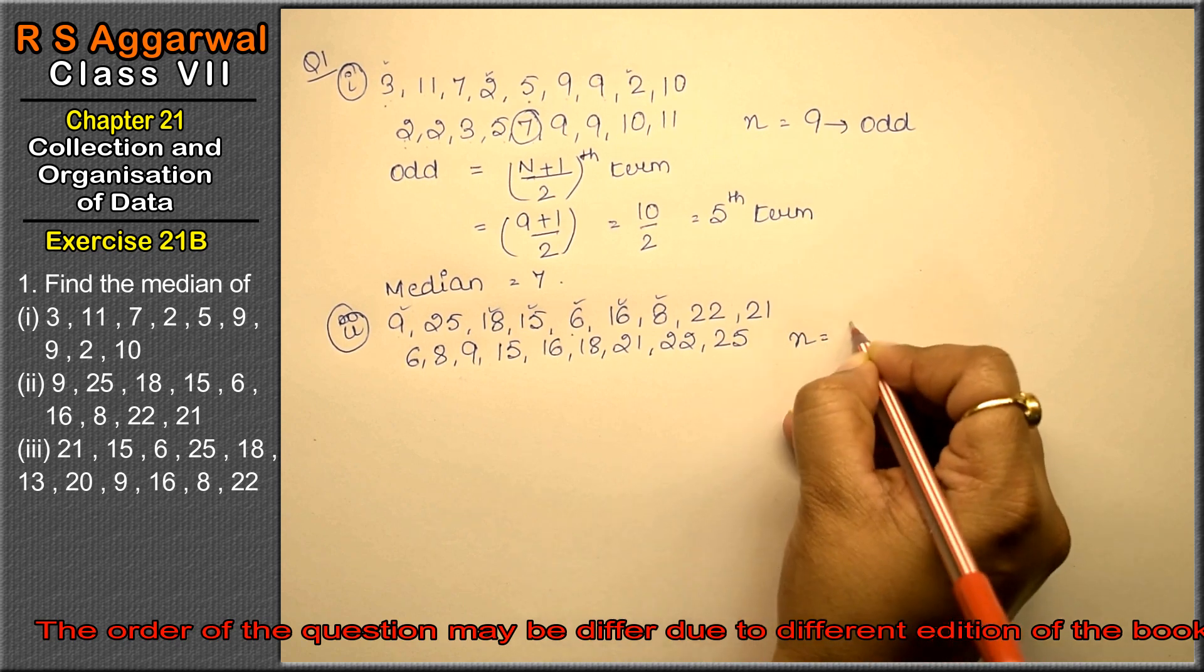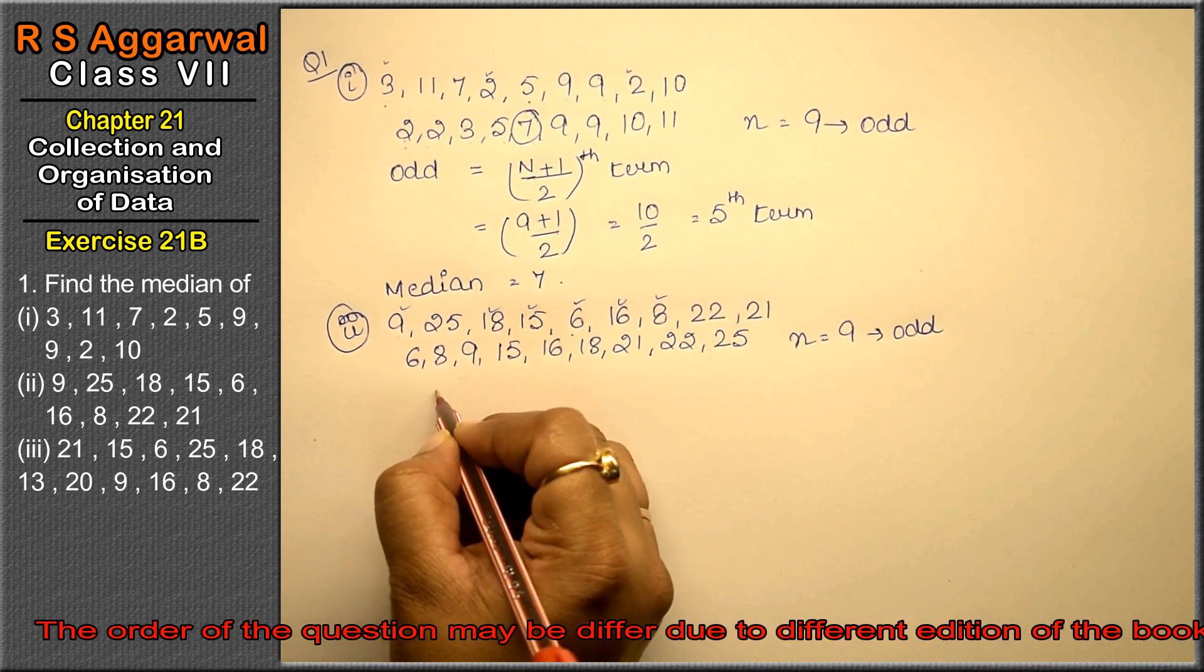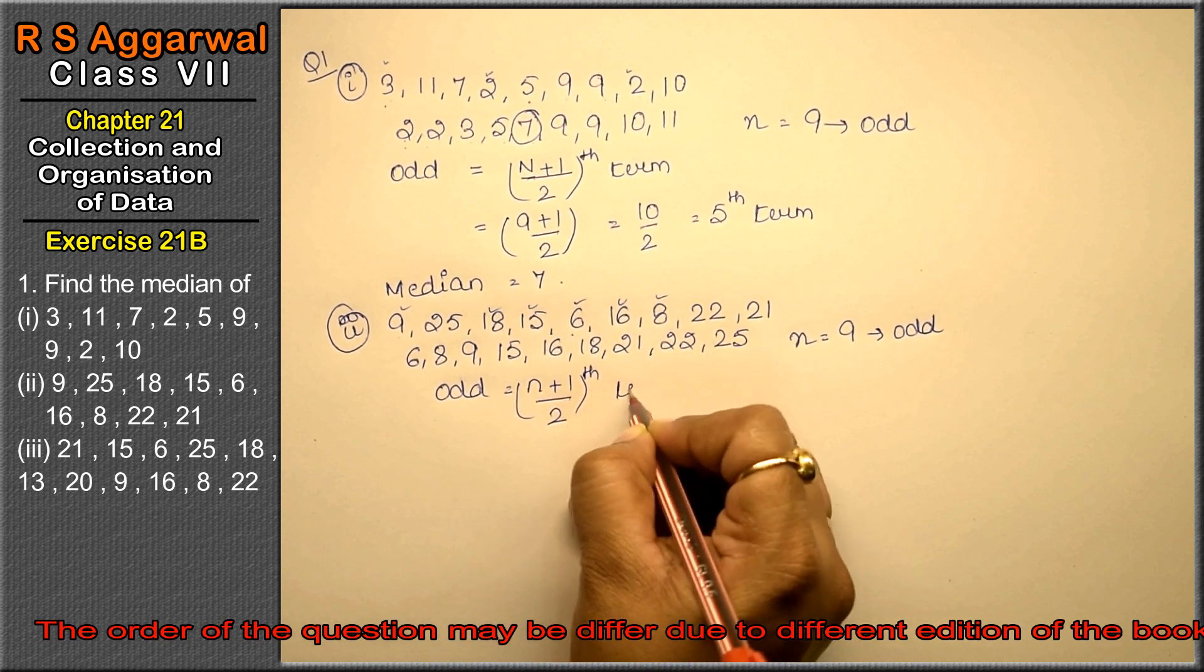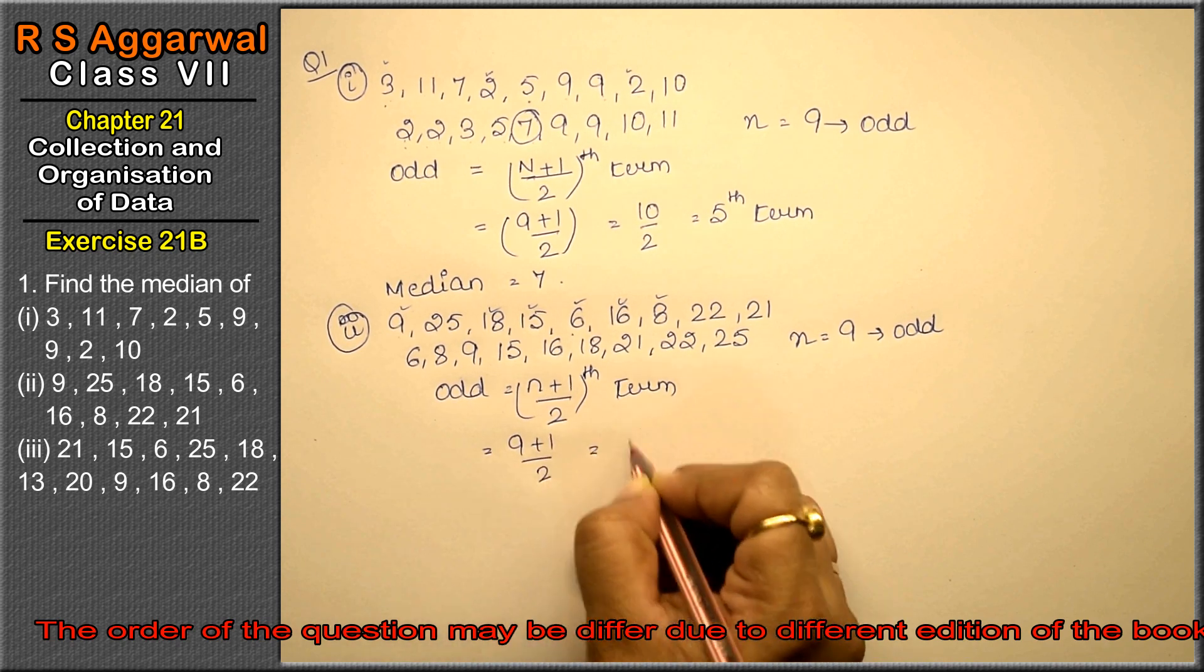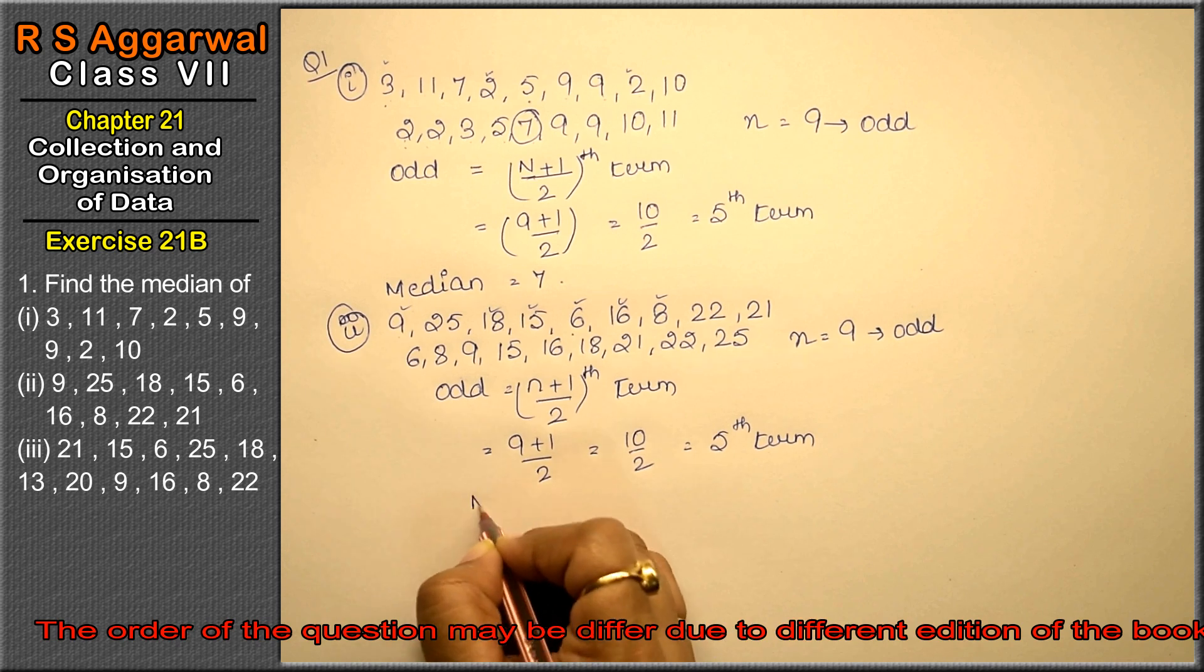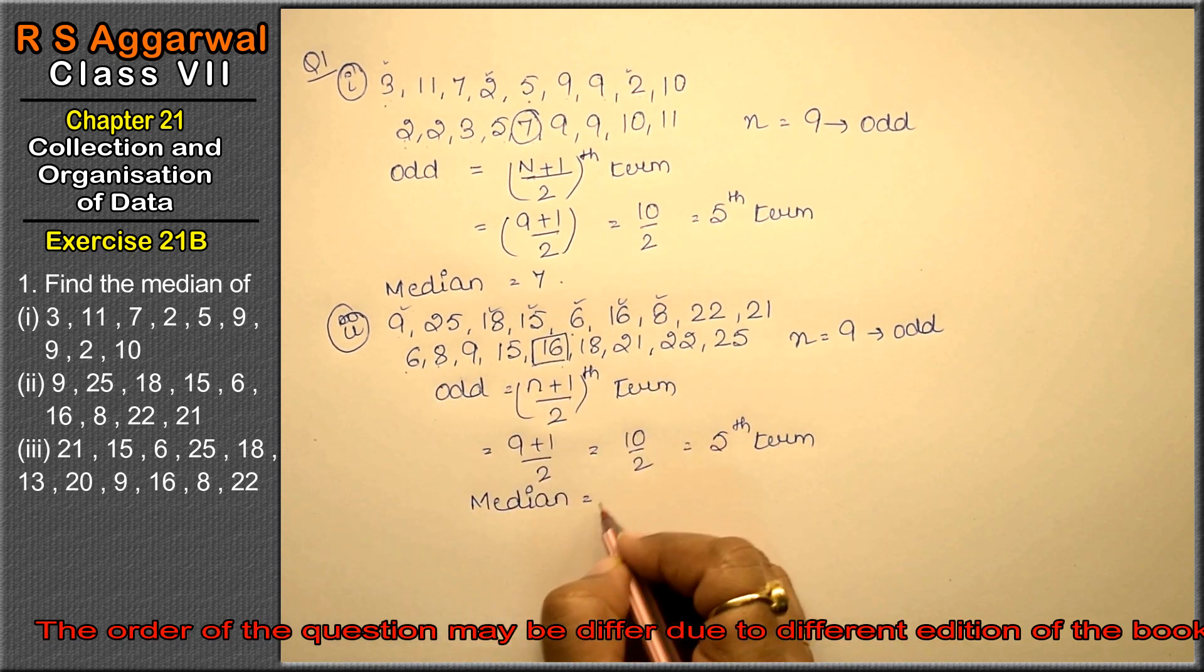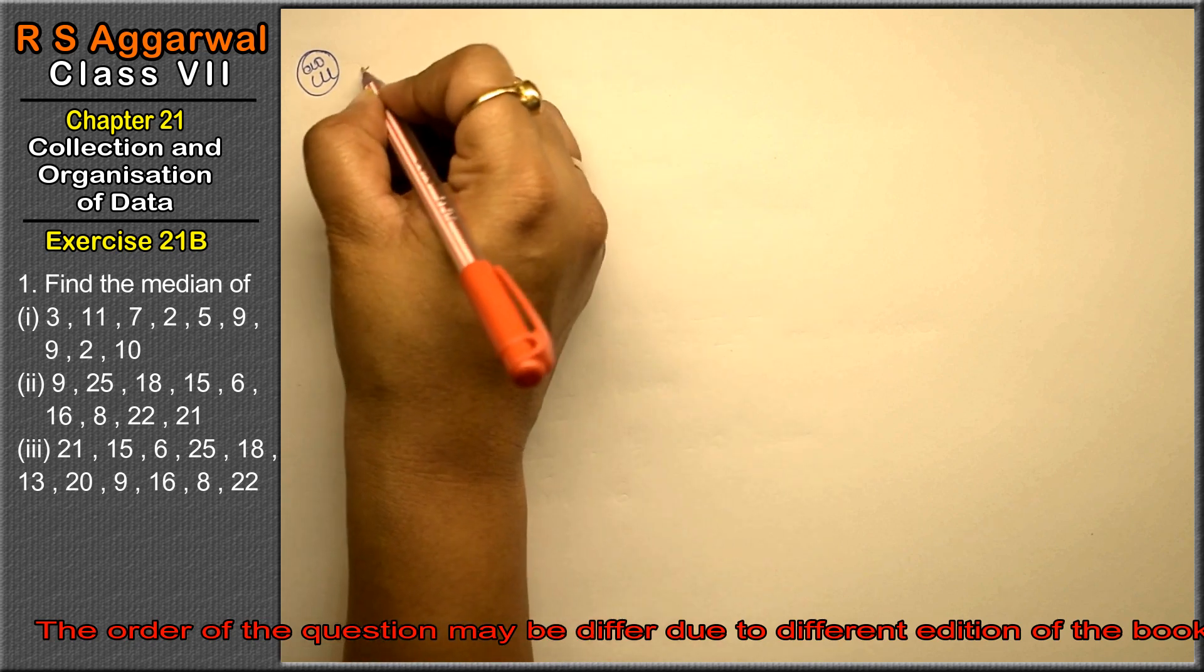Nine numbers, odd. So in odd case, n plus 1 upon 2, fifth term. So 9 plus 1 upon 2, that is 10 upon 2, that is fifth term. Median equals to 1, 2, 3, 4, 5: 16 is the answer.